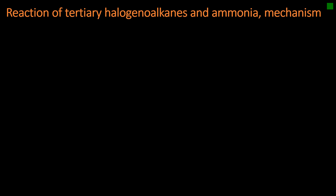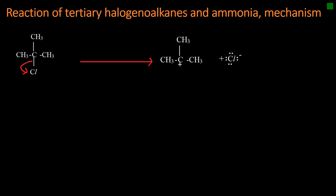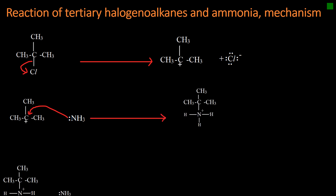Reaction of a tertiary haloalkane with ammonia. The mechanism is similar to that of a primary alkyl chloride, but this one happens in three steps. The first step is self-ionization of the tertiary halide, which gives a carbocation and a chloride ion. The positive charge on carbon in the carbocation attracts electrons from the nitrogen of ammonia, forming a dative covalent bond and an ammonium ion. The ammonium ion formed is not stable because of the positive charge on the very electronegative nitrogen.